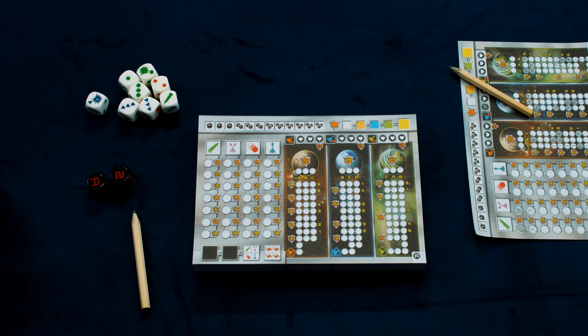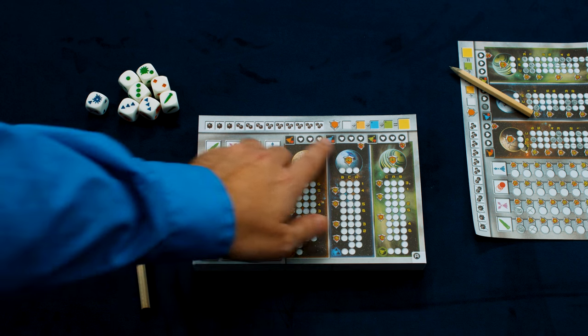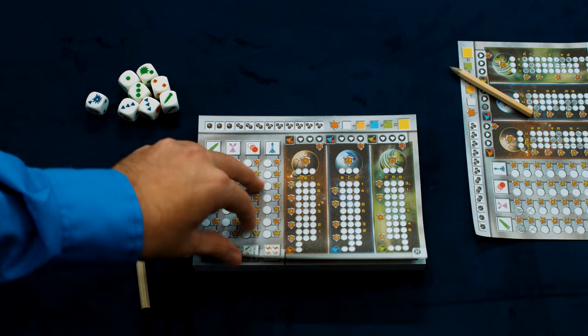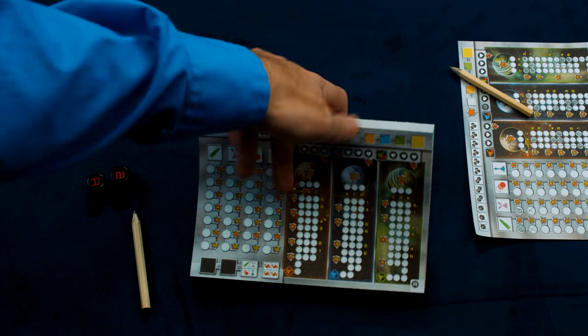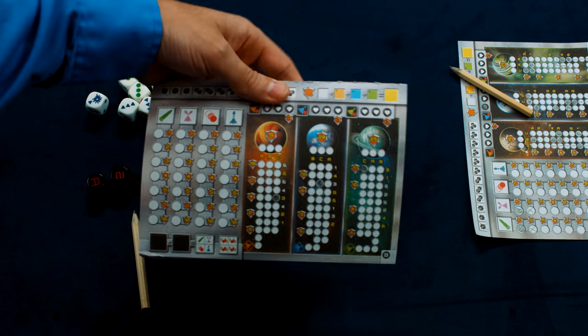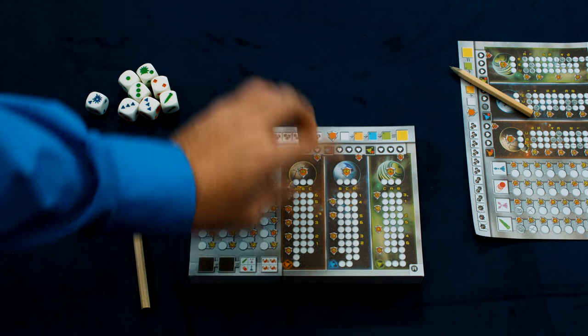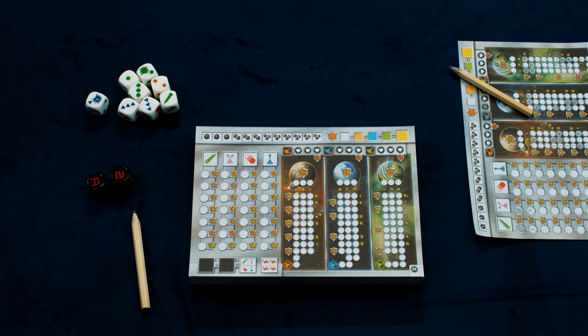Now, this is a roll and write game. So each player is going to have their own particular sheet, which they're all the same. There is an advanced side on the other side, a B side, but typically both players are going to be playing with the same side.